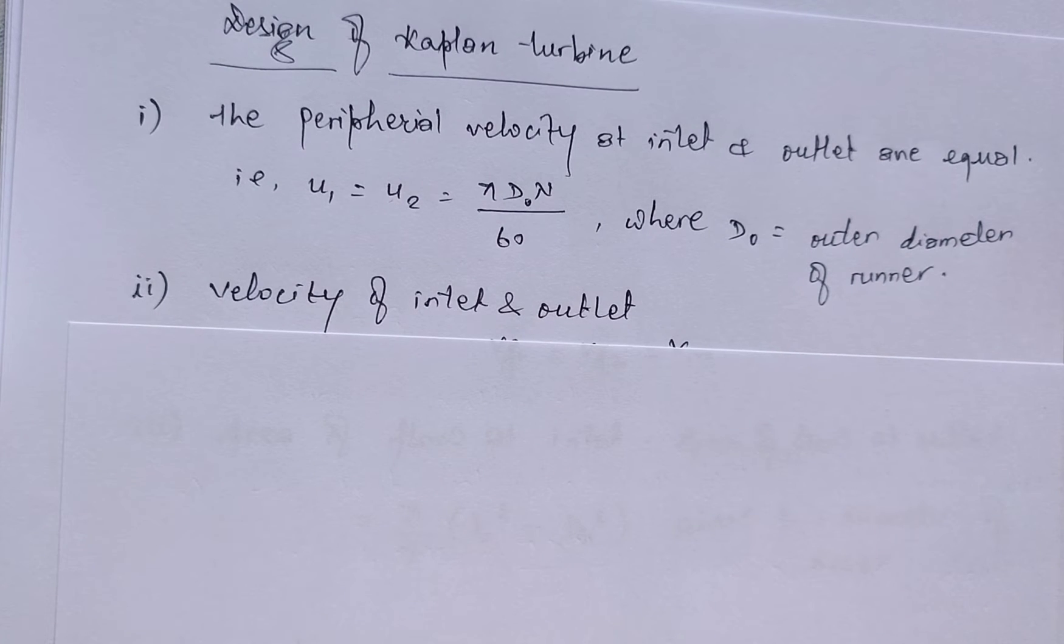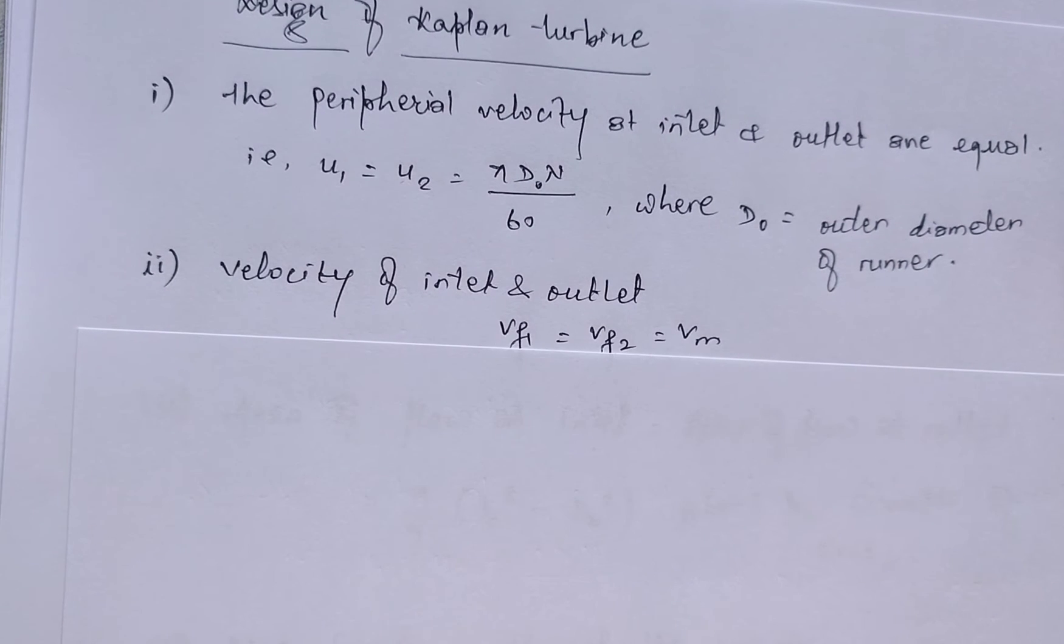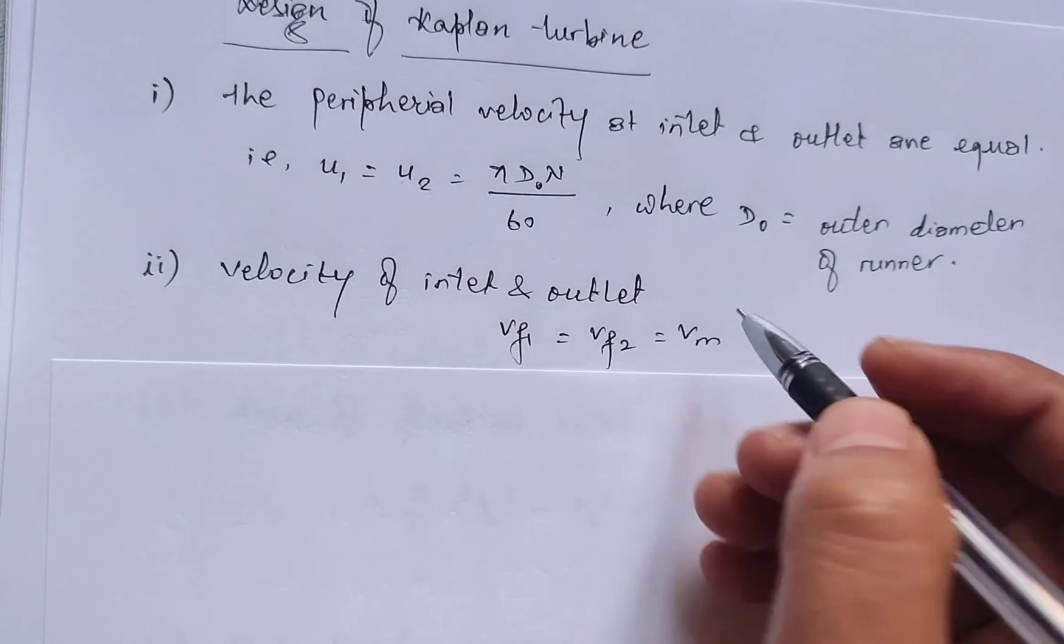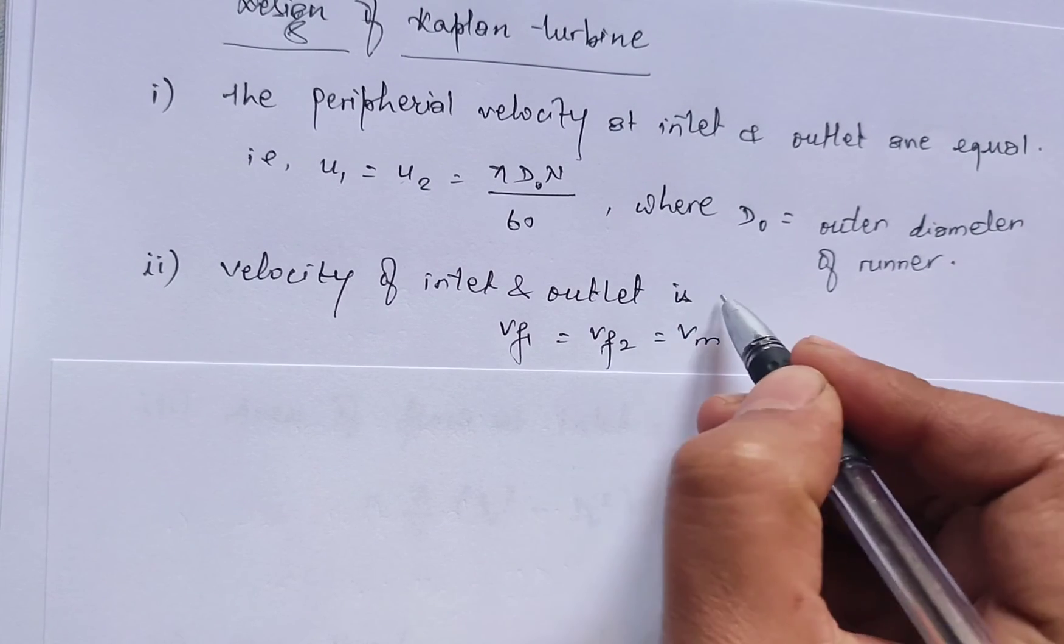Second, velocity of inlet and outlet is equal, that is Vf₁ = Vf₂ = Vm.